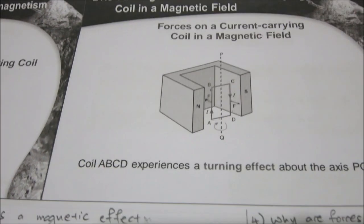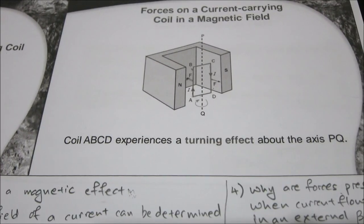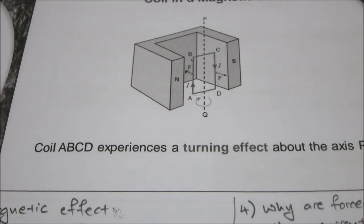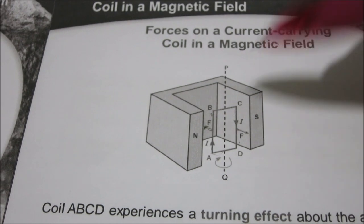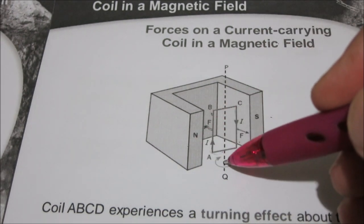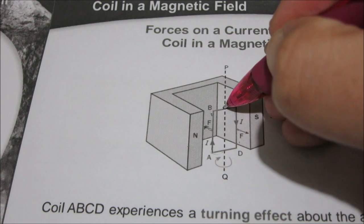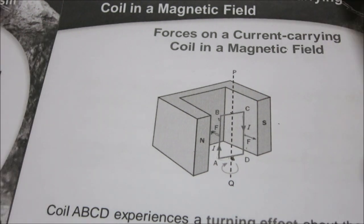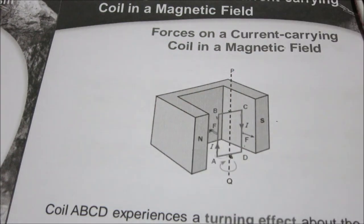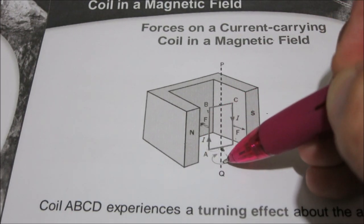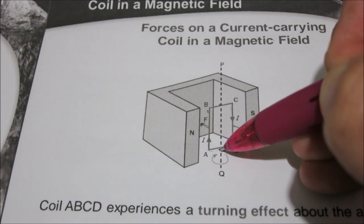This is how a DC motor looks like — a very simple mock-up. You have an external magnet with a north and south pole. You have a coil of wire, and the coil of wire is mounted on an axis which allows it to freely rotate around that axis.